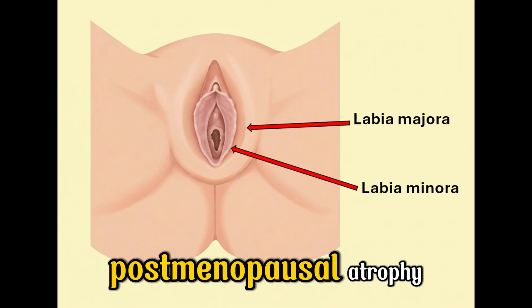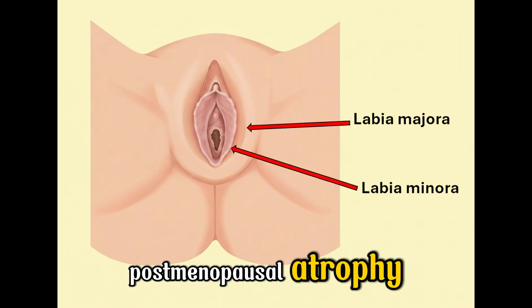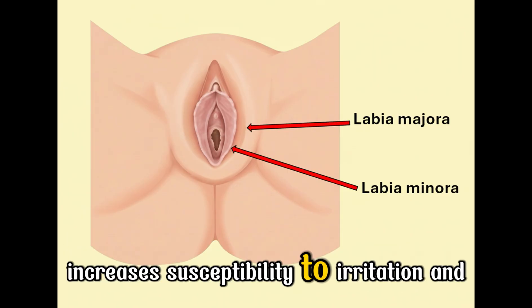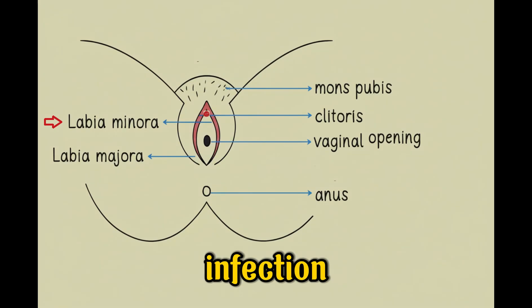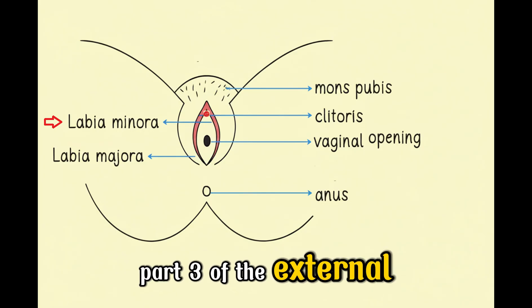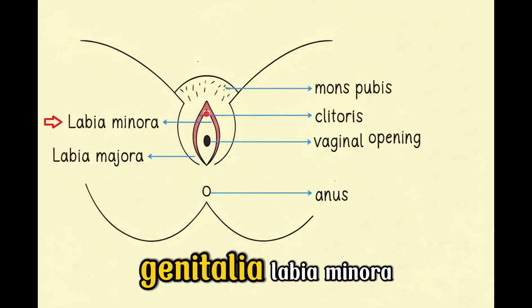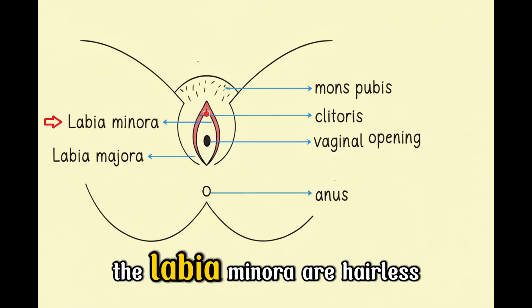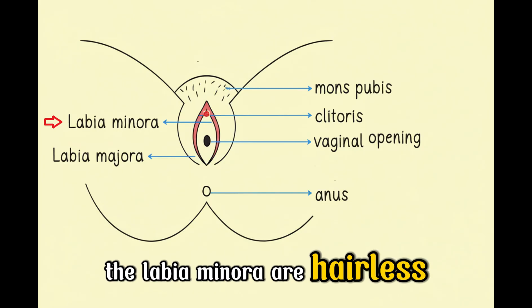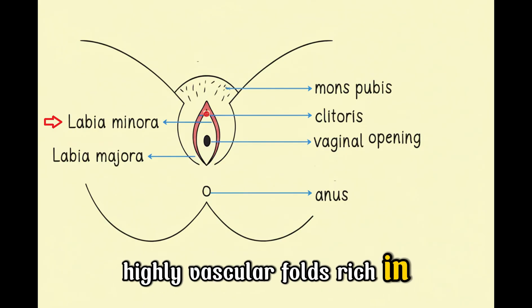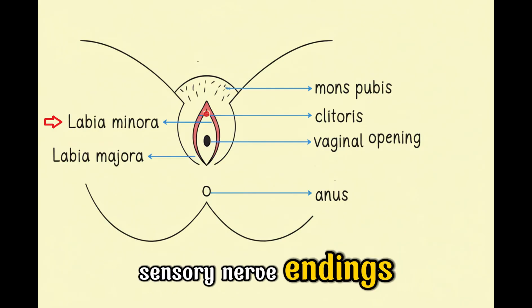Post-menopausal atrophy increases susceptibility to irritation and infection. Part 3 of the external genitalia: labia minora. The labia minora are hairless, highly vascular folds rich in sensory nerve endings.